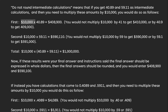First, $10,000 x 40.89 equals $408,900. You would not multiply $10,000 by 41 to get $410,000, or by 40.9 to get $409,000.